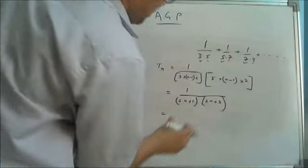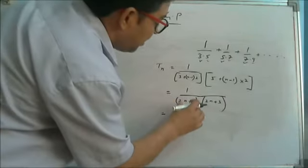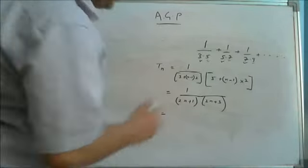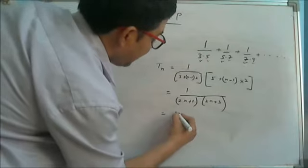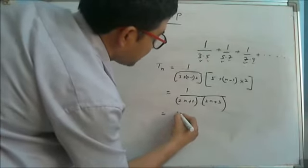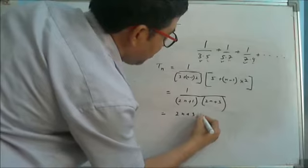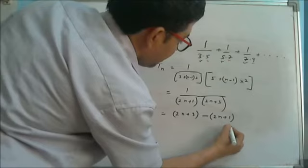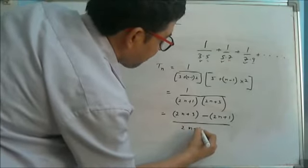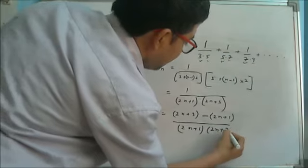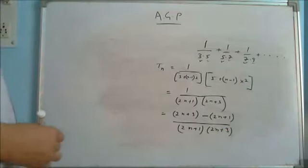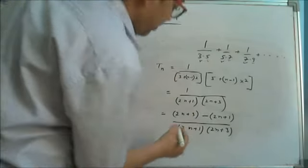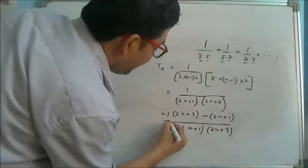Partial fraction is an algebraic operation where two or more things are there in the product — we subtract them so that they can be easily separated. I am giving you a technique: you just subtract the bigger term from the smaller in the numerator. On solving, you will get that in the numerator 2 is there, but actually 1 was there, so it is coming out to be 2. So I will divide it by 2.